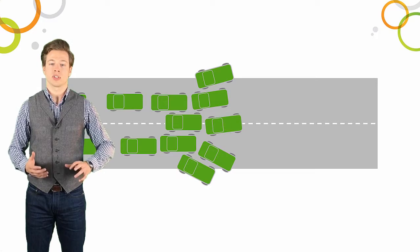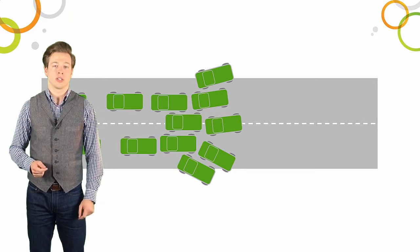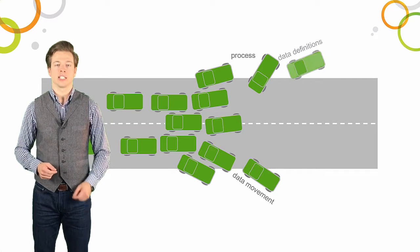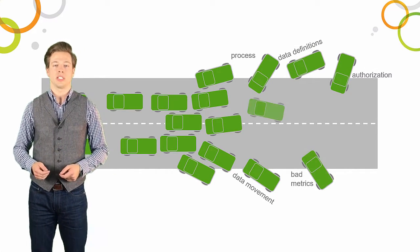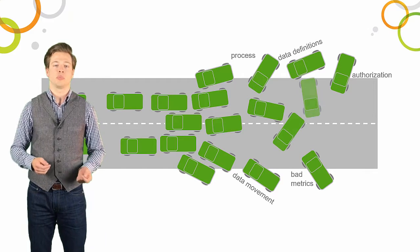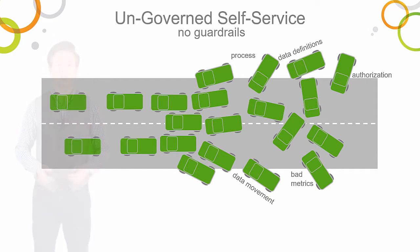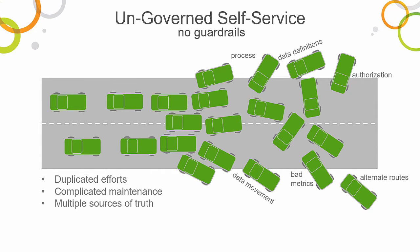A lack of guardrails seems to cause them to go off course. Without guardrails to control process, data movement, data definitions, and authorization, accidents happen rapidly and continuously impede progress in making decisions. Consequently, users find alternate routes leading to duplicated effort, complicated maintenance, and multiple sources of the truth. The good news is there is a better way.